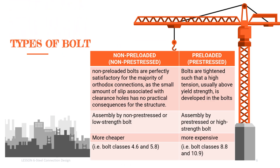Non-preloaded bolts are perfectly satisfactory for the majority of orthodox connections, as the small amount of slip associated with clearance holes has no practical consequences for the structure. They are assembled by non-pre-stressed or low-strength bolts, are cheaper, and come from bolt classes 4.6 and 5.8.